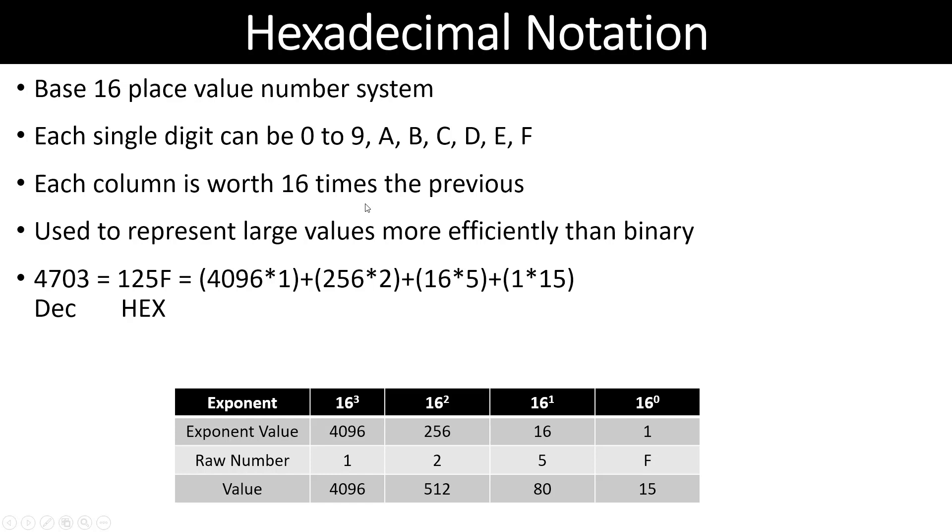Each column is going to be a different power of 16. Just like before, we have base 16, then the exponents 0 to 3. Notice how much faster these grow. We have a column of 1s, then 16s, 256, and 4096. What this means is we can take a very long binary number and represent it quickly with a much shorter hexadecimal number.